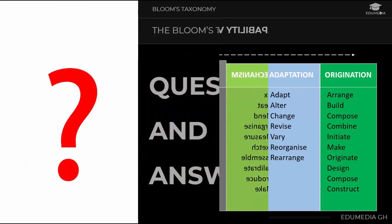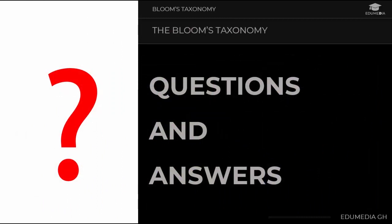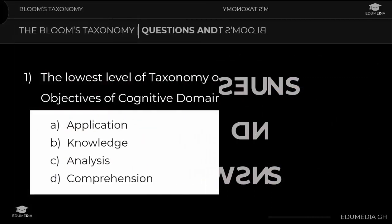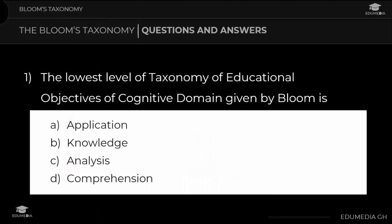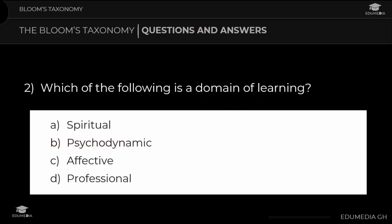Now we'll look at questions and answers. For each question, pause the video and try to answer it yourself before checking the answer. Question 1: The lowest level of Bloom's taxonomy of educational objectives in the cognitive domain is: a) application, b) knowledge, c) analysis, d) comprehension. The answer is knowledge. Question 2: Which of the following is a domain of learning? a) spiritual, b) psychodynamic, c) affective, d) professional. The answer is affective.